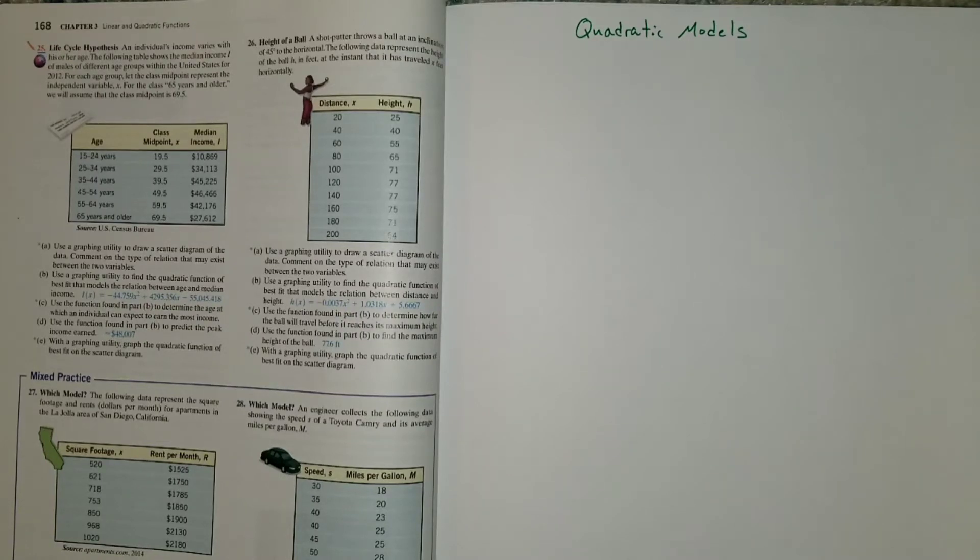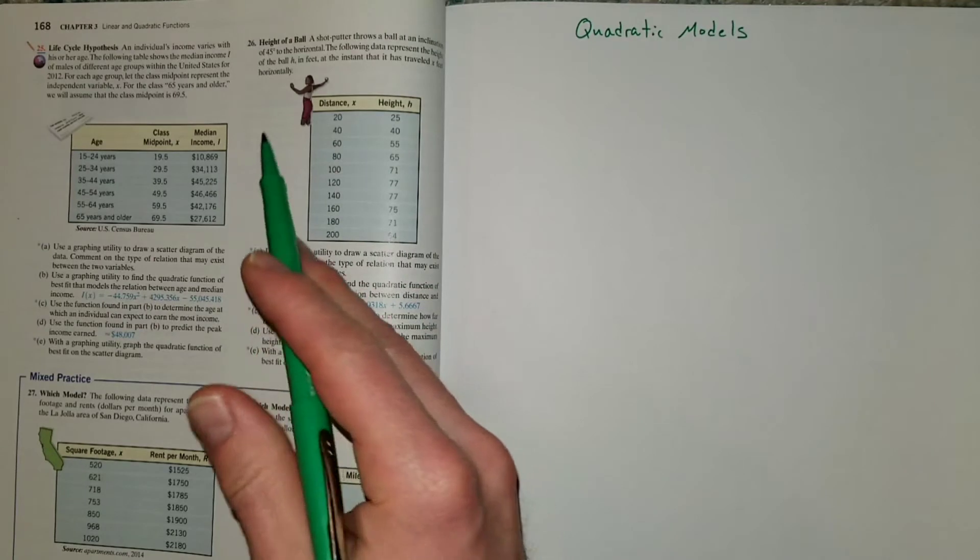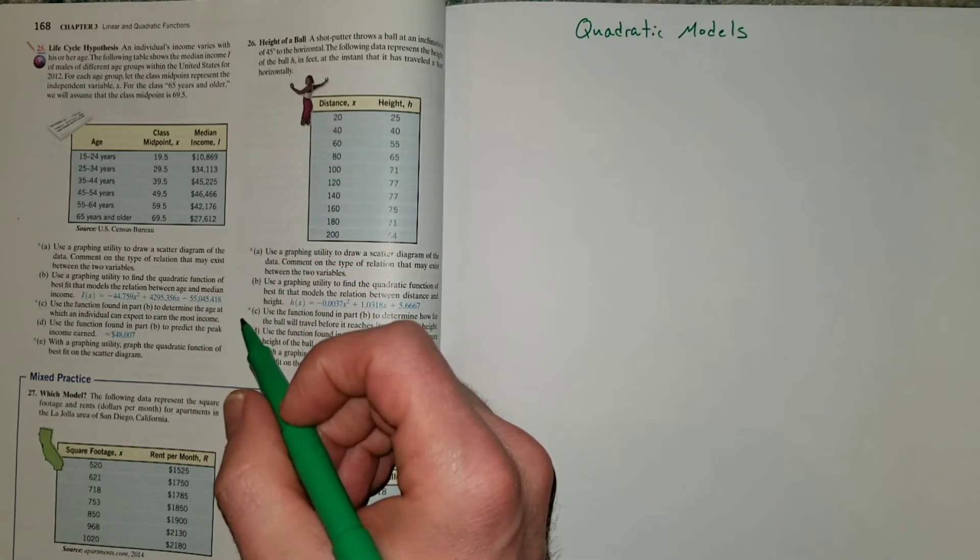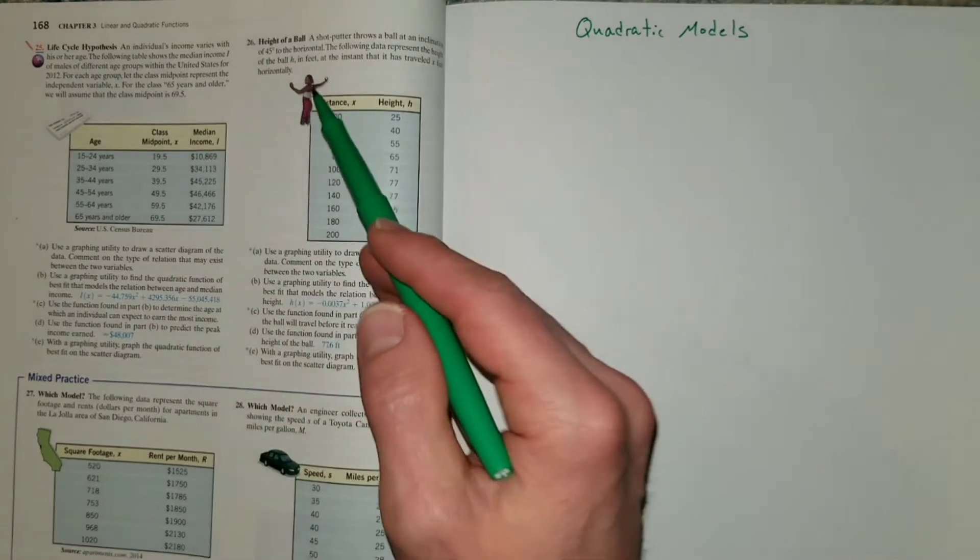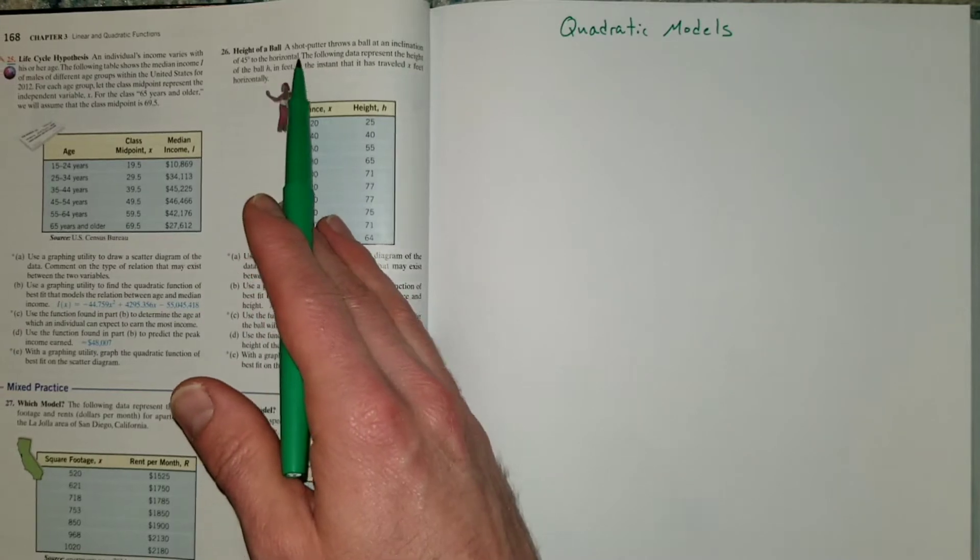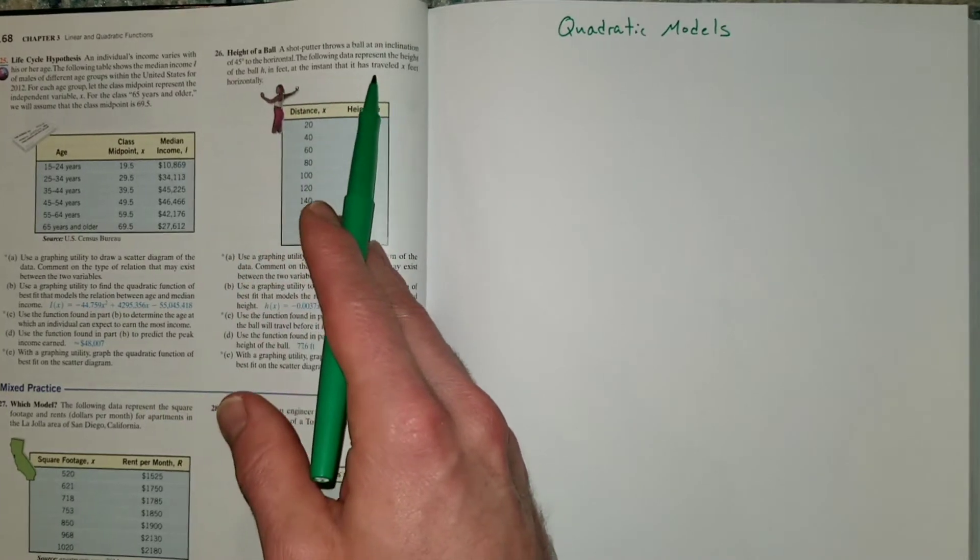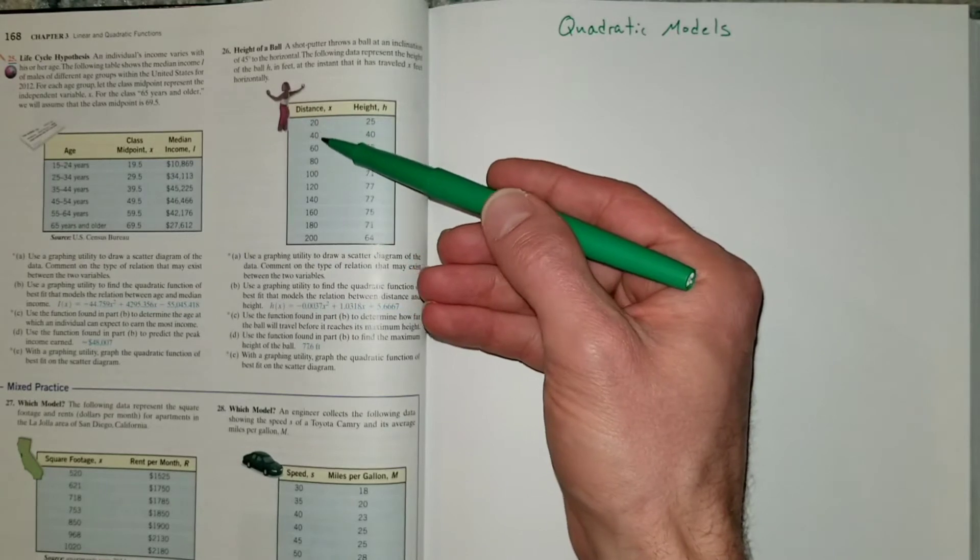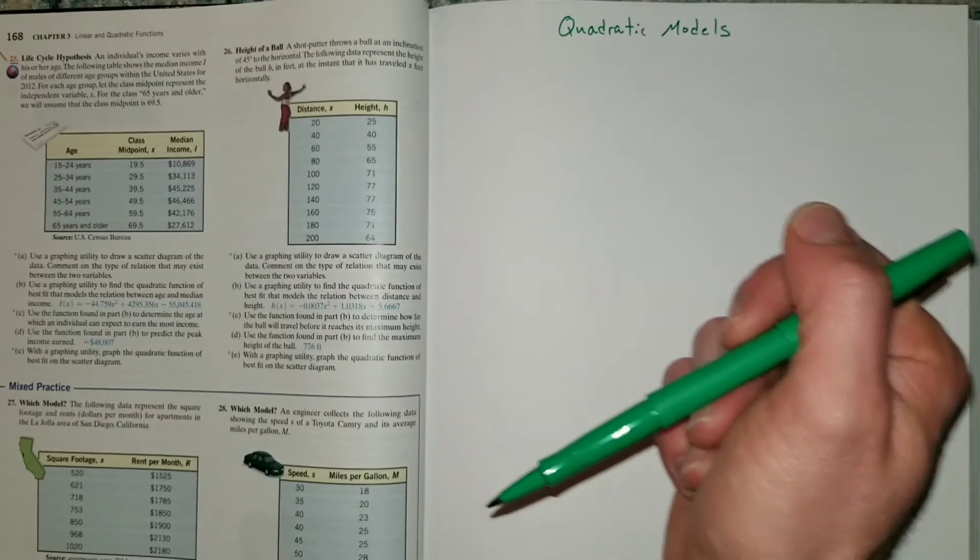Now that we have looked at quadratic functions, we're going to apply what we know about the graphs of quadratic functions to model data. I'm going to go through an example here. This is number 26 in your textbook, section 3.4. We're looking at the height of a ball. A shot putter throws a ball at an inclination of 45 degrees to the horizontal. The following data represents the height of a ball in feet at the instant that it has traveled X feet horizontally. So you have a horizontal distance from the thrower and the height of the ball at that time, or at the time that it crosses that point.